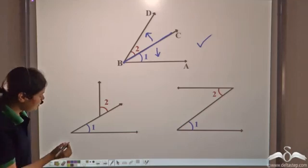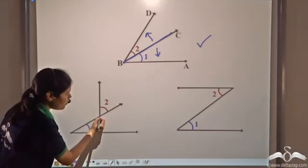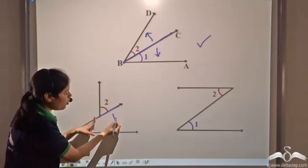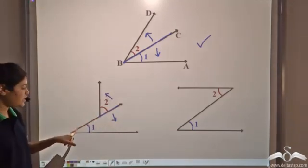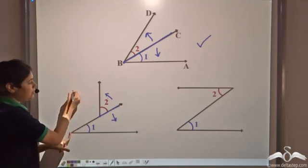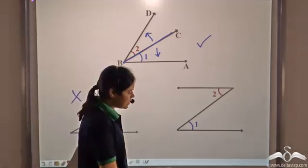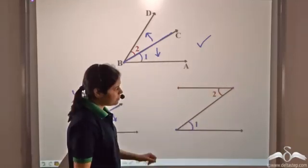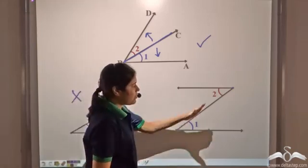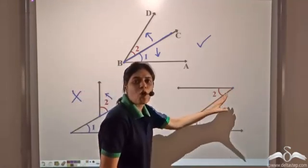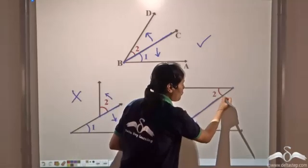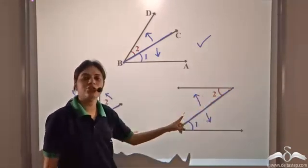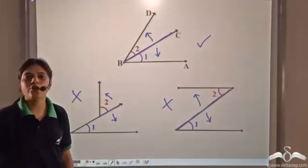What about this case? Here, the vertex of angle one and the vertex of angle two are different points. So although they have a common arm and the non-common arms are on opposite sides, since the vertex is not the same, these two are not adjacent angles. Similarly, in another case, even though they share a common arm and the non-common arms are on opposite sides, the vertex is not the same, so these two are also not adjacent angles.